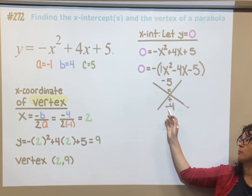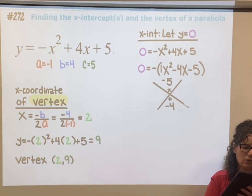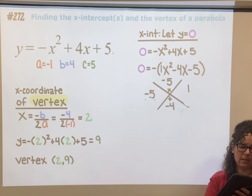So we need the bigger number to be negative so we have more negatives than positives. So that ends up being negative 5 and positive 1.